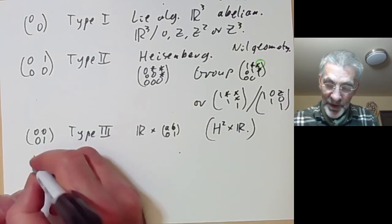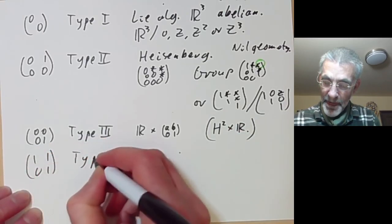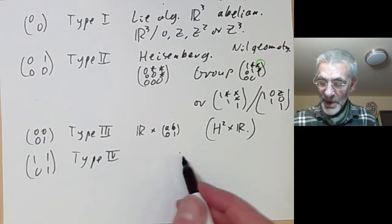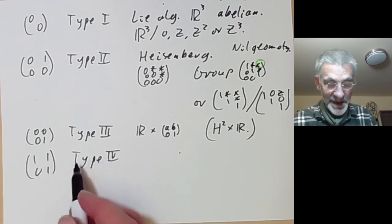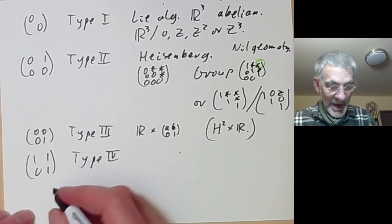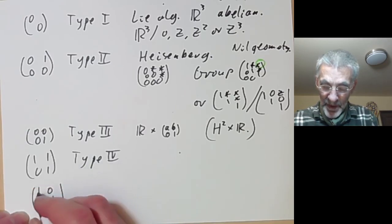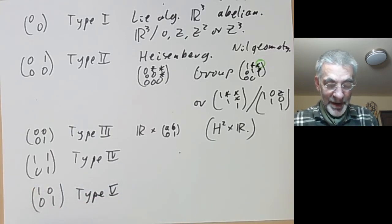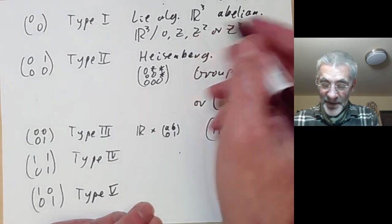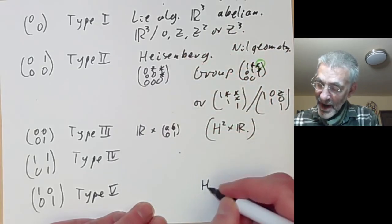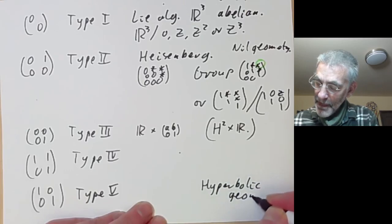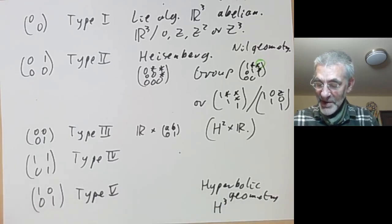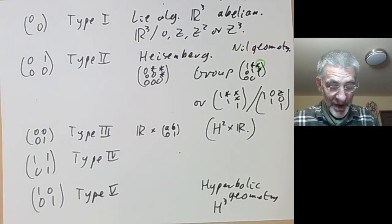The matrix (0, 1; 0, 0) [with a one in the upper right] gives Bianchi type 4, which doesn't really correspond to any Thurston geometry. The matrix (1, 0; 0, 1) — the identity — gives Bianchi type 5. For Thurston's geometries, this corresponds to hyperbolic geometry H³: you can put a left-invariant metric on this group which turns it into a hyperbolic space.